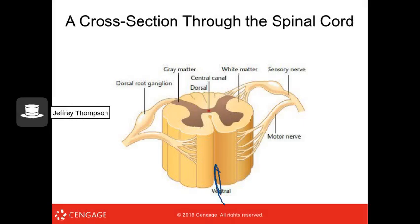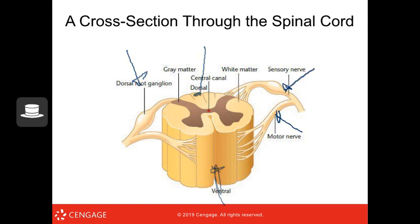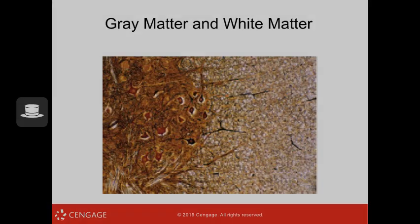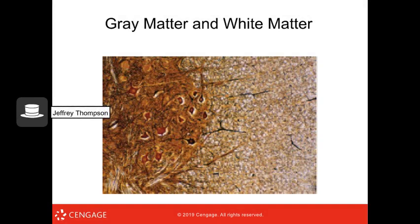Here we can see the ventral and dorsal sides of the spinal cord. The dorsal root ganglion is visible along with a sensory nerve and a motor nerve. Ventral roots take motor information to the rest of the body; dorsal roots bring sensory information in. Gray matter on one side contains lots of cell bodies and dendrites; white matter on the other side contains myelinated axons.